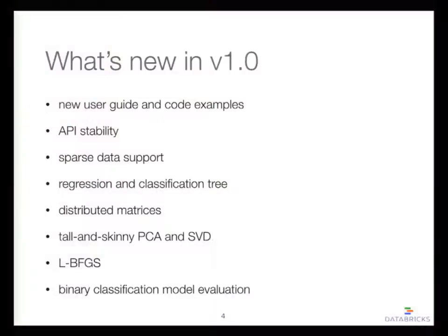In 1.0, which was released in May, we added many new features to MLlib. From a user's perspective, we updated the MLlib user guide — it's more organized and we added a lot of code examples. If you go to the Spark documentation, you can see we support APIs in Java, Python, and Scala. We have code tabs, so you can click Java and only see Java code examples, or switch to Python and everything is tailored for Python users.